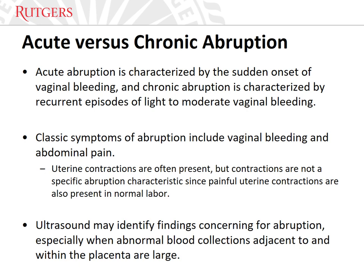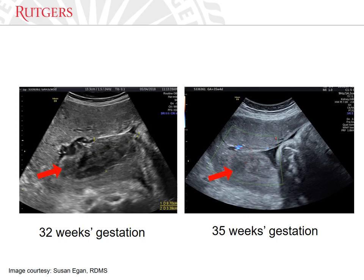Ultrasound may identify findings concerning for abruption, especially when abnormal blood collections adjacent to and within the placenta are large. In a study of ultrasound characteristics among 30 patients with abruption, ultrasound had sensitivity of 57% and specificity of 100%. Concealed abruption may manifest with symptoms of abdominal pain and uterine contractions but without overt vaginal bleeding or with small quantities of bleeding, and can be severe, leading to fetal death and coagulopathy. Although ultrasound is a useful adjunct in diagnosing placental abruption, there are limitations due to the similar echo texture of hemorrhagic products and placenta.